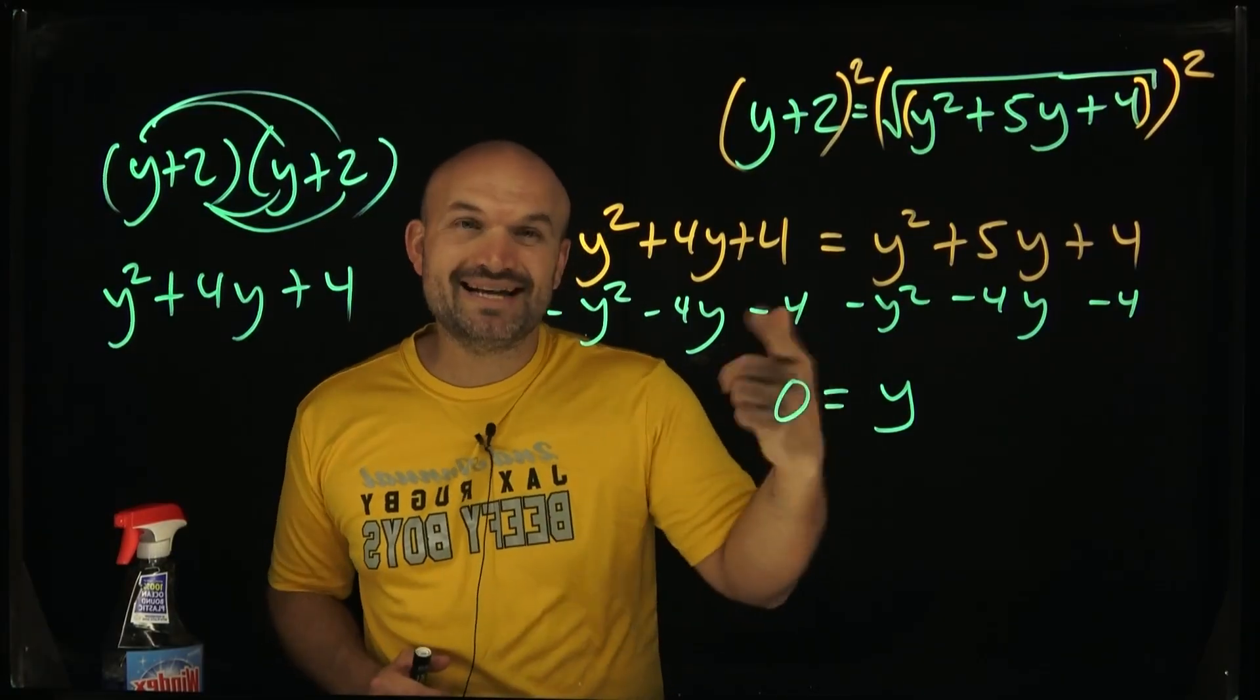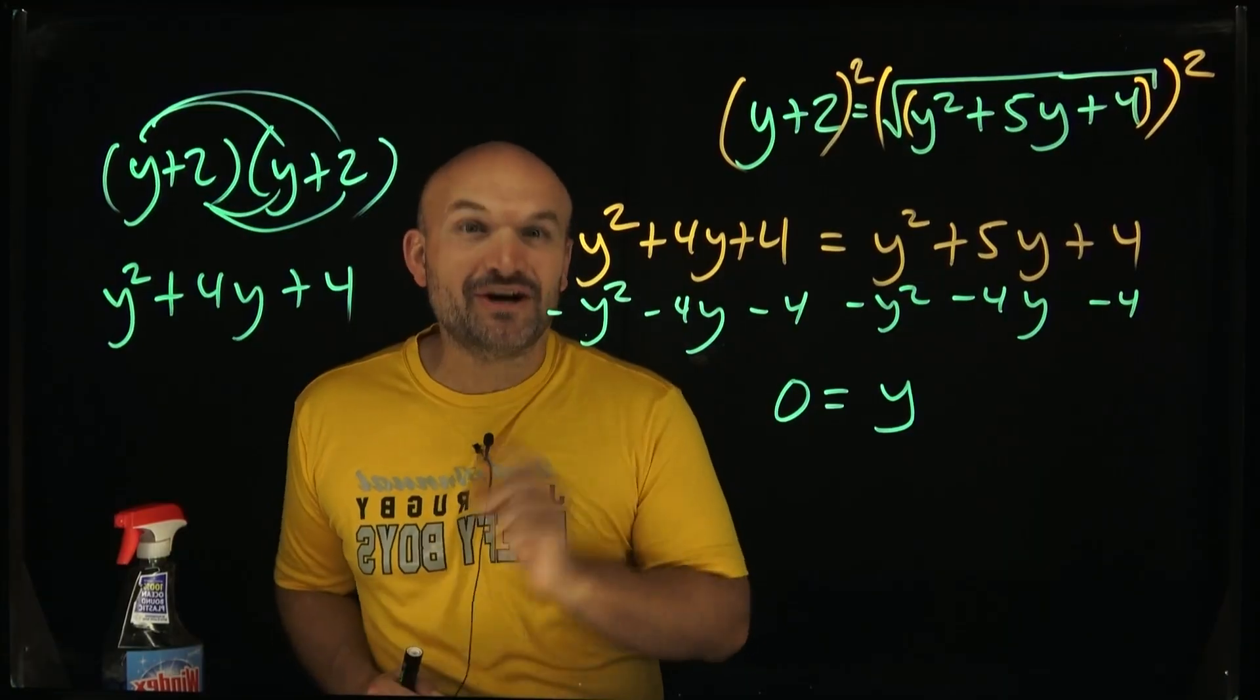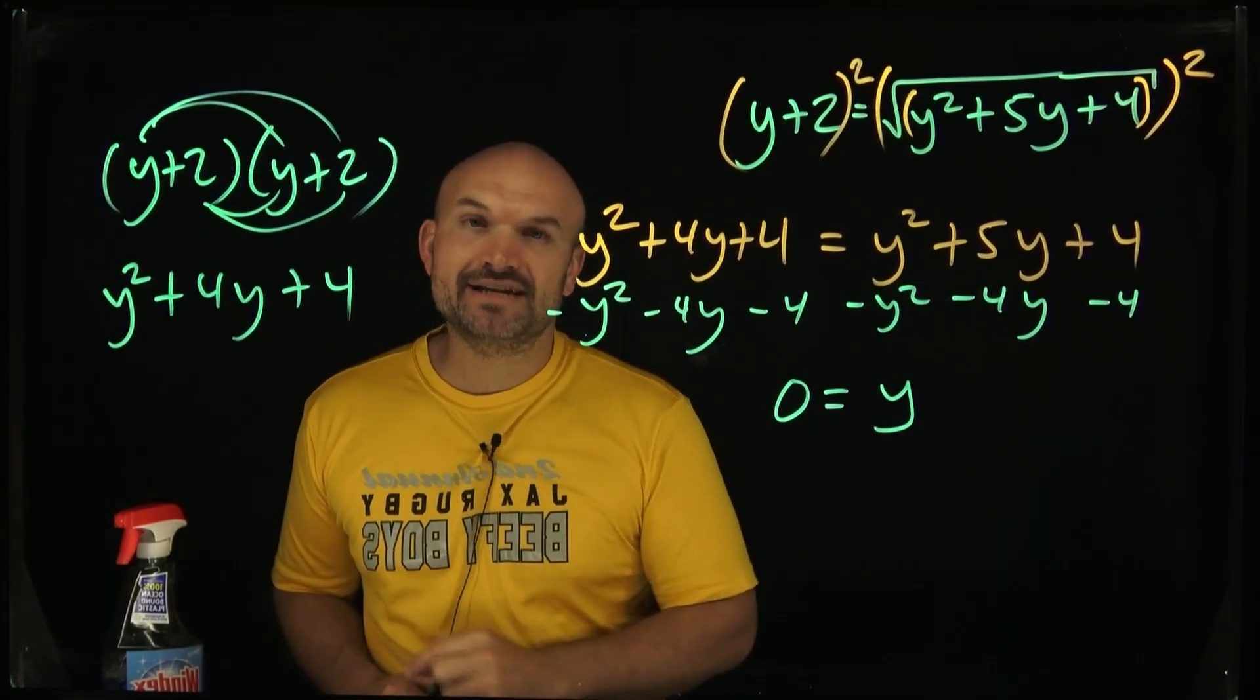Therefore we're going to go with this solution y is equal to zero. Now if you're wondering why I'm checking my answer, because in the next video I'll show you what exactly happens when we have an extraneous solution.